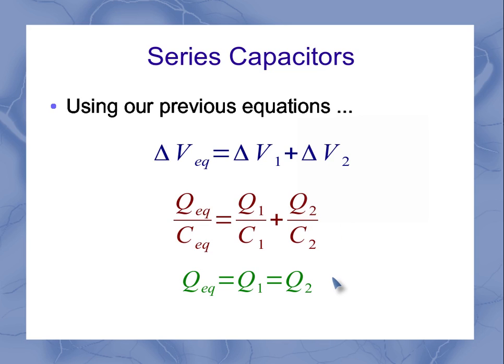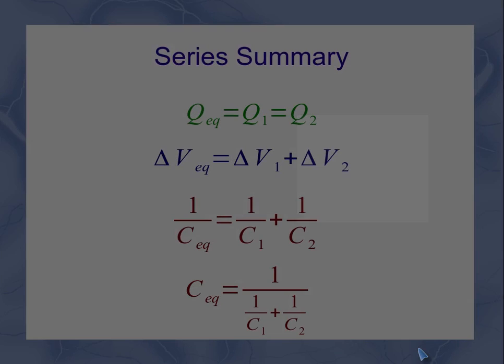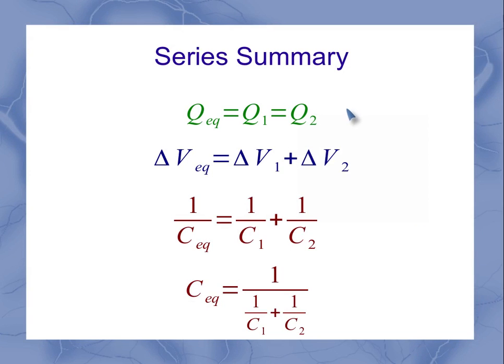Now, I make use of my charge equation, which tells me that the three charges are the same. And that means in this equation, my three charges can actually cancel out, leaving me with just 1 over the equivalent capacitance equals 1 over C1 plus 1 over C2. Now, just to summarize then, we've got equations for charge, voltage, and capacitance. And for capacitance, I just have two equivalent ways of writing out that fraction.